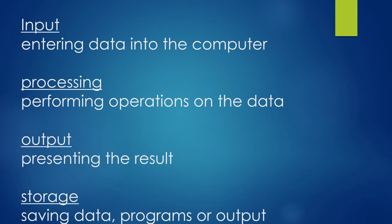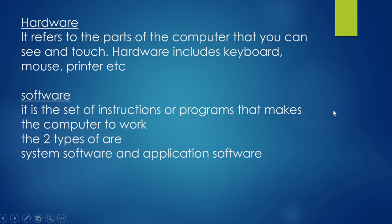For storage we use primary memory and secondary memory. Hardware means the physical components of the computer, or parts of the computer — such as keyboard, mouse, monitor, CPU, and so on. Hardware refers to the parts of the computer that you can see and touch — keyboard, mouse, printer, etc.